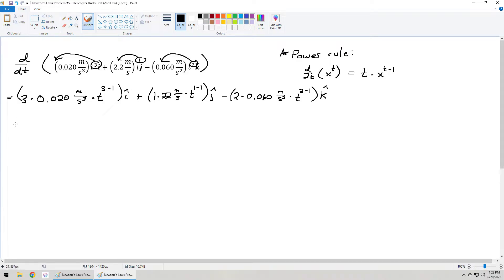0.060 meters per second squared, multiplied by t squared, I'm going to subtract 1, and that's it for the k-hat direction. That's what the derivative is doing, if you're not familiar with how that mathematical function behaves. If I simplify this, I get 0.060 meter per second cubed times t squared, and that chunk is in the i-hat direction.